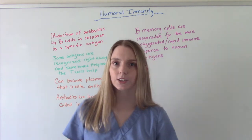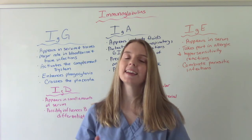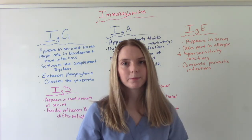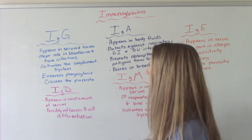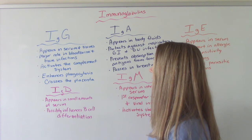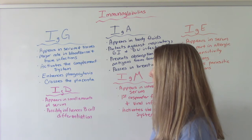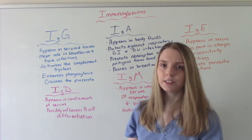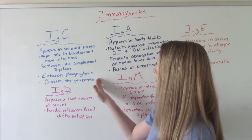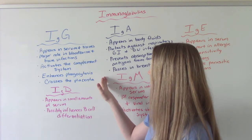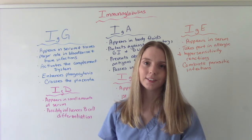I also want to talk about the different types of immunoglobulins. We have IgG, which appears in the serum and the tissues. Its major role is in bloodborne and tissue infections. It can activate the complement system and enhances phagocytosis — destroying those foreign pathogens. And it does cross the placenta, so someone who is pregnant can pass these antibodies onto their unborn child.